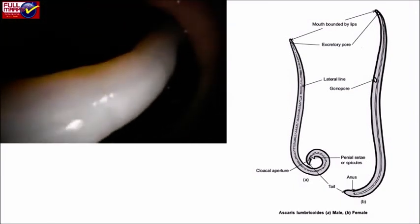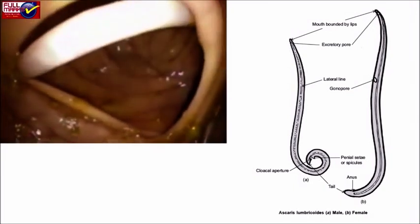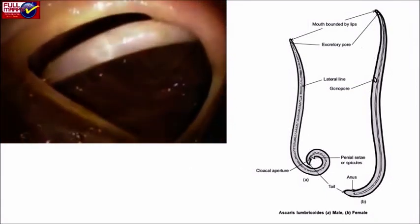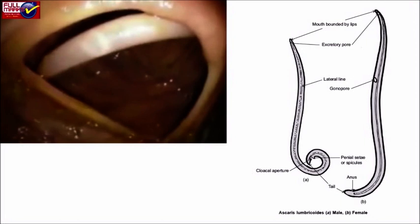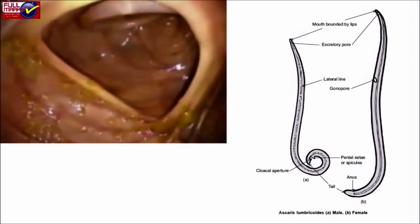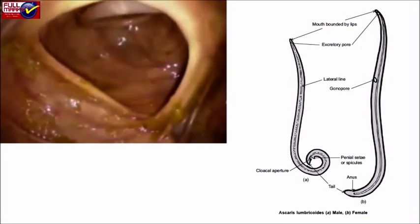Mouth is tri-radiate at anterior end, surrounded by three lips: one mid-dorsal plus two ventral lateral. Possesses four longitudinal epidermal lines in the entire length of the body: one dorsal, one ventral and two lateral lines.